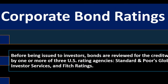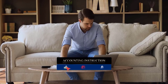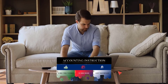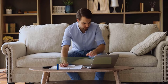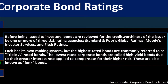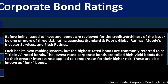Before being issued to investors, bonds are reviewed for the credit worthiness of the issuer by one or more of three United States ratings agencies: Standard and Poor's Global Rating, Moody's Investor Services, and Fitch Rating. These tools are great, though not perfect — we've seen times when highly-rated instruments haven't performed well. Each agency has its own ranking system, but the highest rated bonds are commonly referred to as triple-A rated bonds, which carry quite low risk.